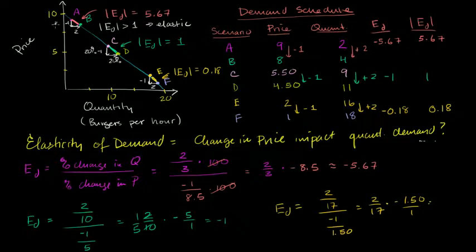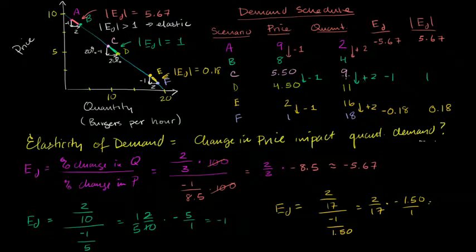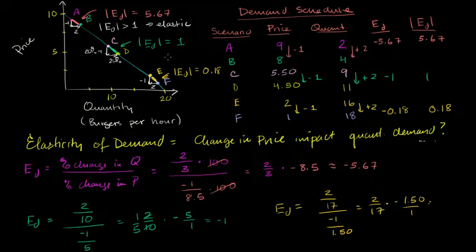You have a 20% change in price and a 20% increase in quantity — 20% because it's 2 over the average of 10. So the magnitude of your elasticity of demand is exactly 1. When the magnitude of the elasticity of demand is exactly 1, we say that you have unit elasticity at that point.